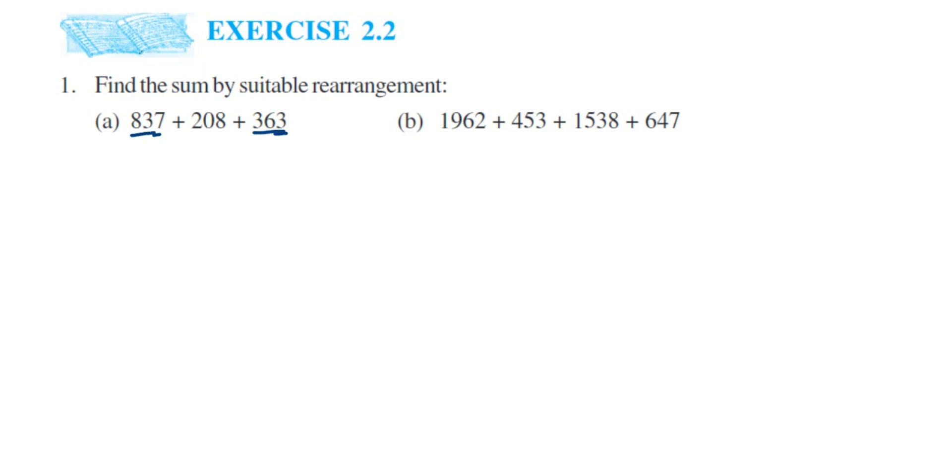So here I'm going to take the first number and last number, I'm going to add them first, and whatever answer I get I'm going to add with 208. So this will be equal to, I'm going to rearrange. I'm going to keep this in a bracket, so in the bracket it's 837 plus 363 plus 208. I'm just rearranging them.